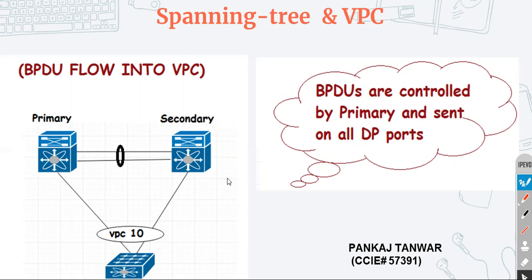When you are using the VPC peer switch feature, the MAC address is by default going to be taken care of by VPC — it will be the same on both sides. But if you do not use the same priority, the bridge ID will be different and your downstream devices are going to find this out. Once your root bridge goes down there will be reconvergence. So we need to make sure we are using the same priority on both peer devices.